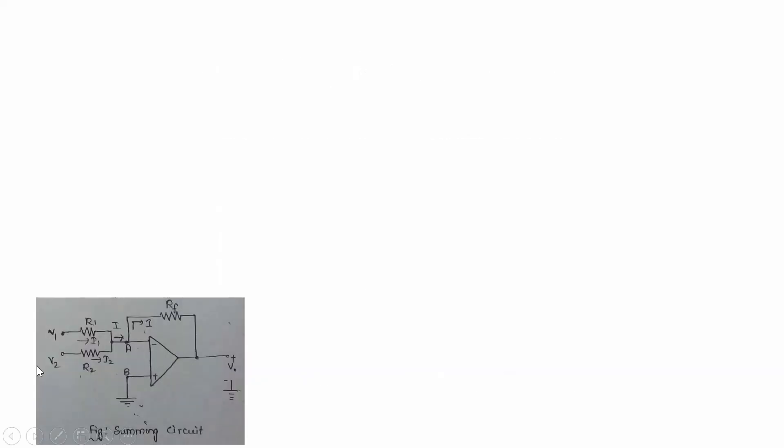In this circuit diagram, V1 and V2 are the two input voltages applied to the inverting terminal through resistances R1 and R2. Node A is at the inverting input and node B is at the non-inverting input terminal. There is a feedback resistance Rf. Since R1 and R2 are connected in parallel, the current is different through each — I1 is the current through R1 and I2 is the current through R2.